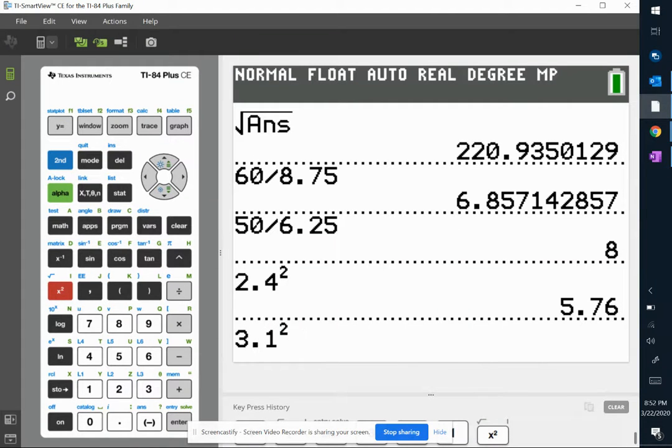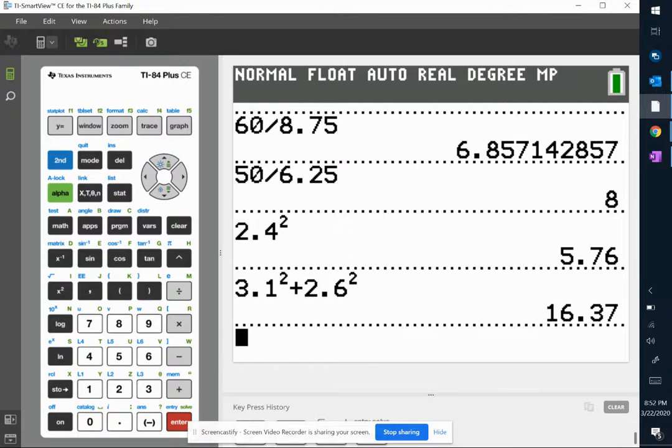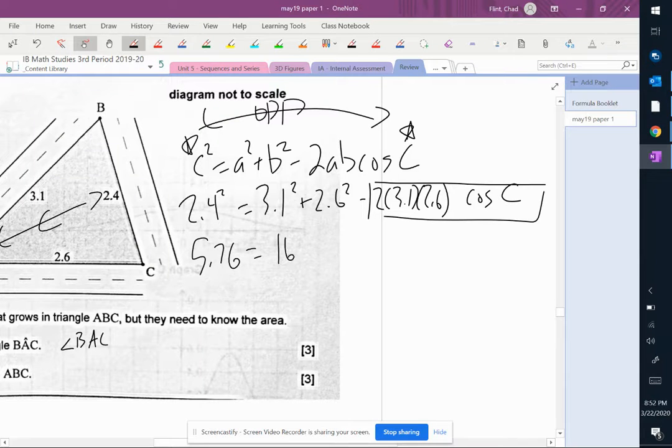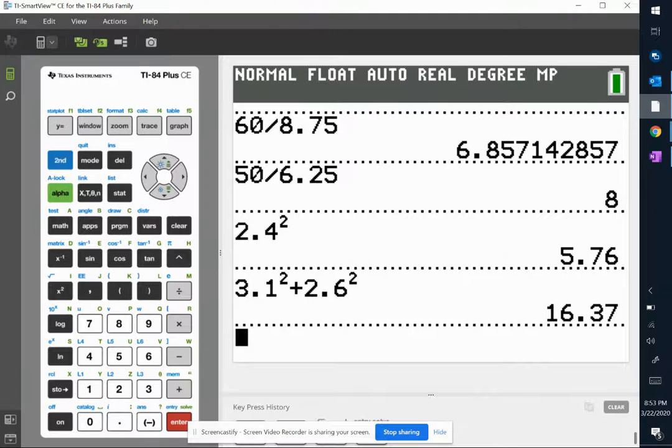So 3.1 squared plus 2.6 squared is 16.37. So 16.37 minus 2. Let's multiply those together too. 2 times 3.1 times 2.6.